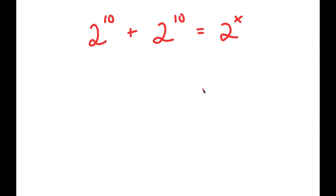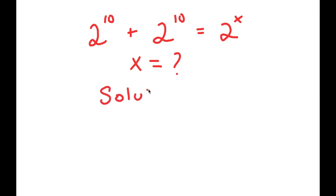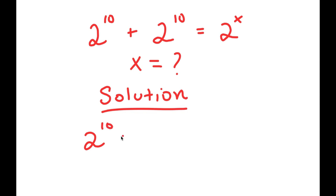So in this problem, I have 2 to the power of 10 plus 2 to the power of 10 is equal to 2 to the power of x. I want to find the value of x here.